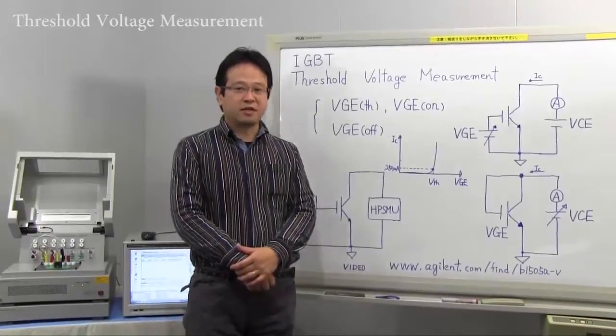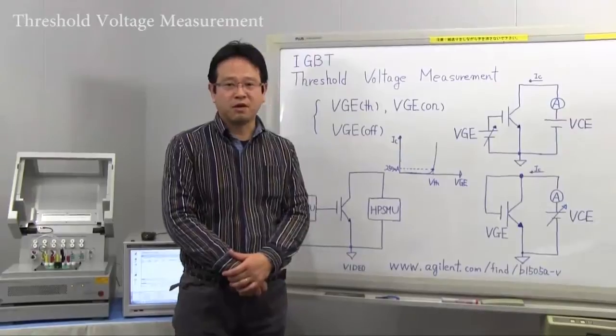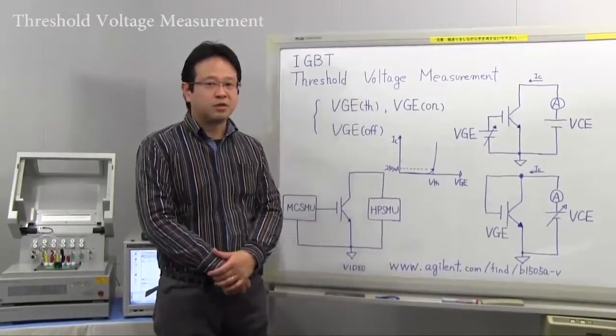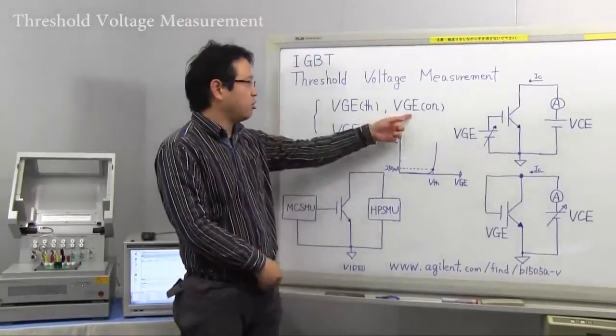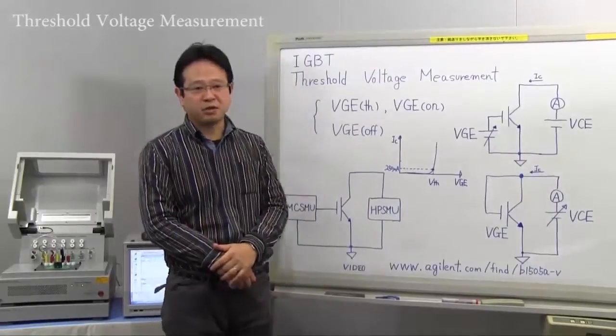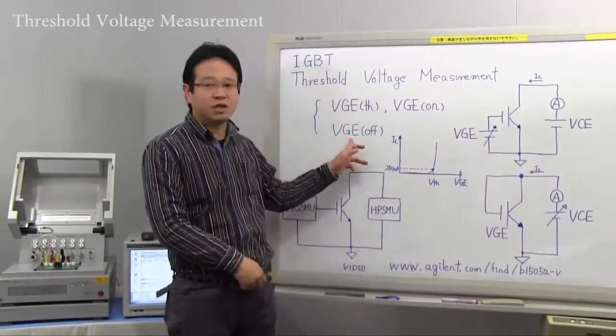Threshold voltage is defined as the gate emitter voltage when the collector current begins to flow at the specified collector emitter voltage. It's called VGE ON or VGE TH. On the other hand, it may be defined as the gate emitter voltage when the collector current is cut off. It's called VGE OFF.